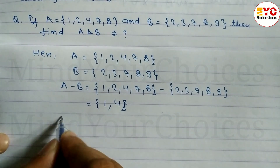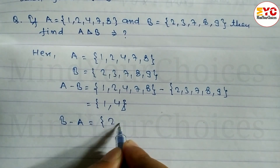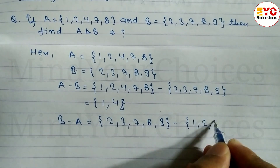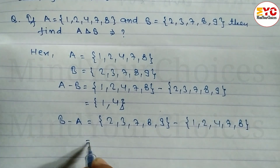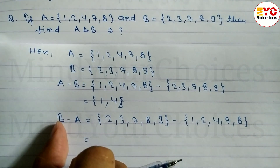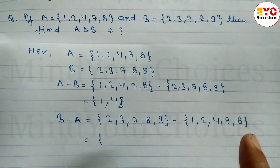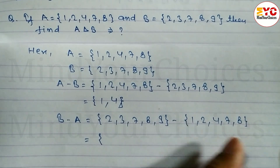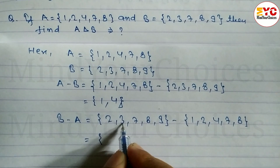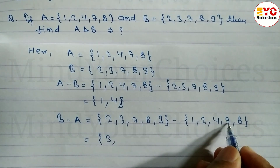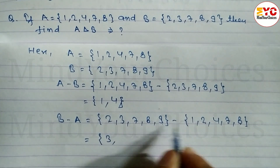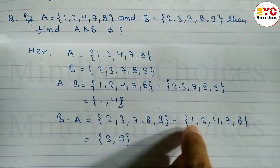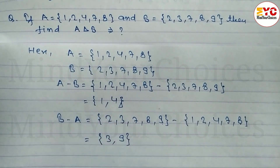Now we find B minus A. Set B = {2, 3, 7, 8, 9} minus set A = {1, 2, 4, 7, 8}. We are subtracting set A, so elements remaining in set A we ignore; elements remaining in set B we write. 2 cancels. 3 is not in A so we write 3. 7 cancels. 8 cancels. 9 is not in A so we write 9. 1 is in A but not in B — no need to write it since we are subtracting set A. So B minus A = {3, 9}.